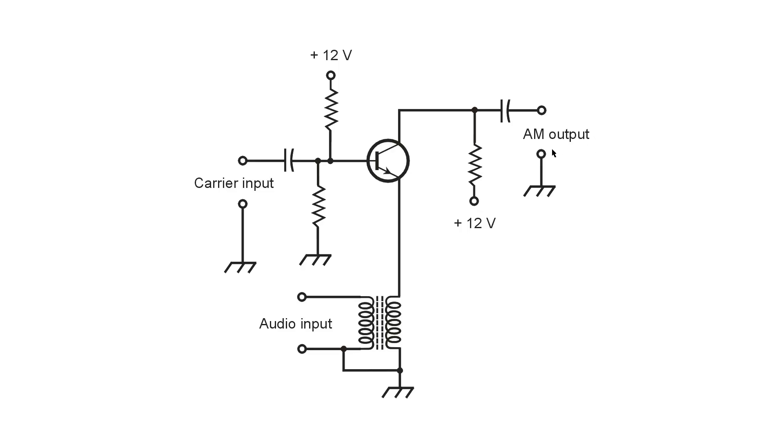so long as the gain remains constant in this amplifier at every point in the audio input cycle, you'll get a nice, clean, amplitude modulated signal at the output. Simple amplitude modulator circuit.